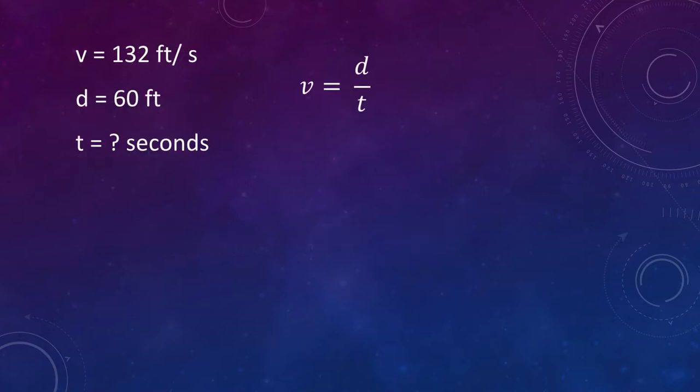V equals D over T. We are solving for T, so isolating the variable, we get T equals D over V. Distance equals 60 feet. T equals 60 over 132, which gives us 0.45 seconds.